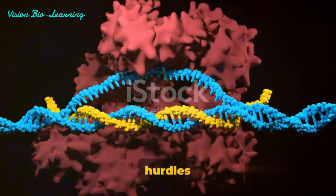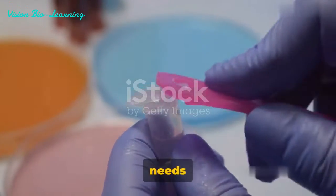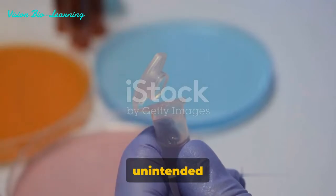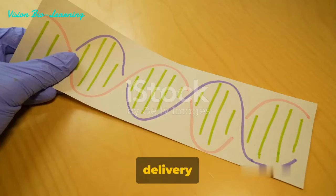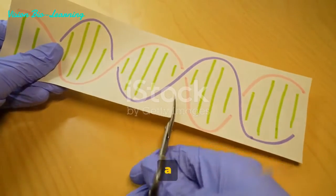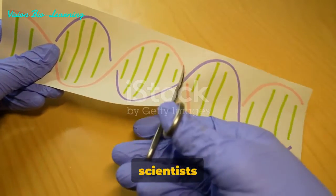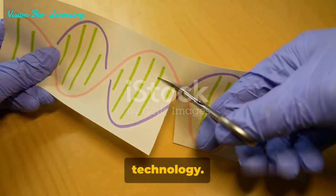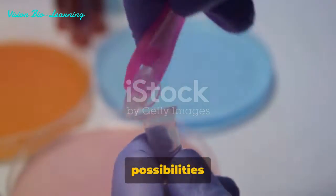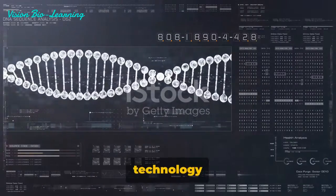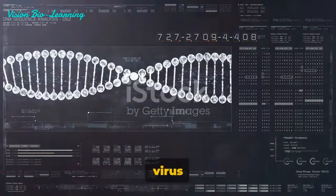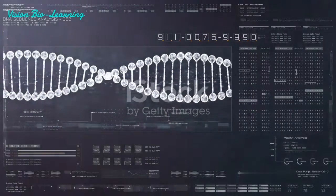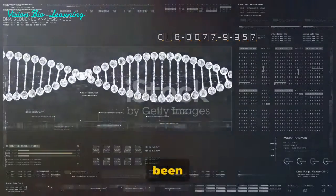There are, of course, hurdles to overcome. The process needs to be precise to avoid unintended consequences. And the delivery of this system to all infected cells is a challenge. But scientists are optimistic and are working tirelessly to perfect this technology. Imagine the possibilities if we could use this technology to cut out the HIV virus from our DNA. This could be the breakthrough we've been waiting for.